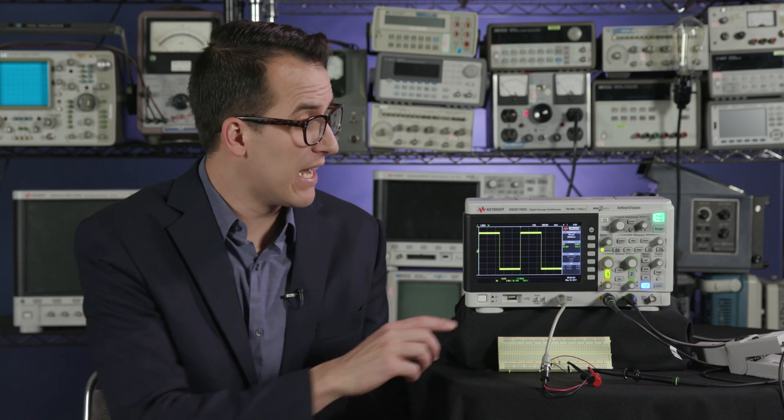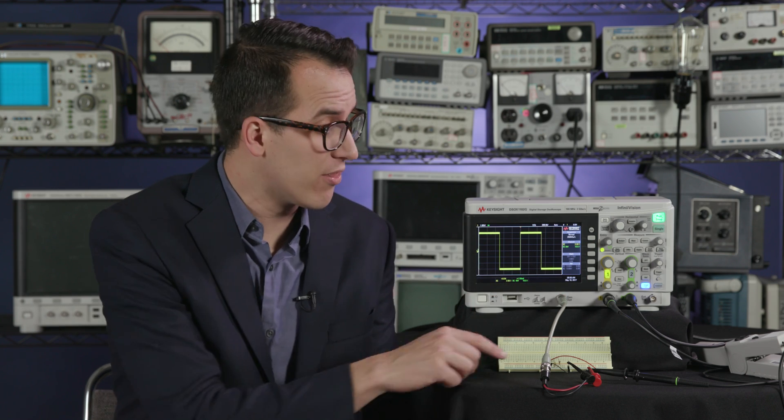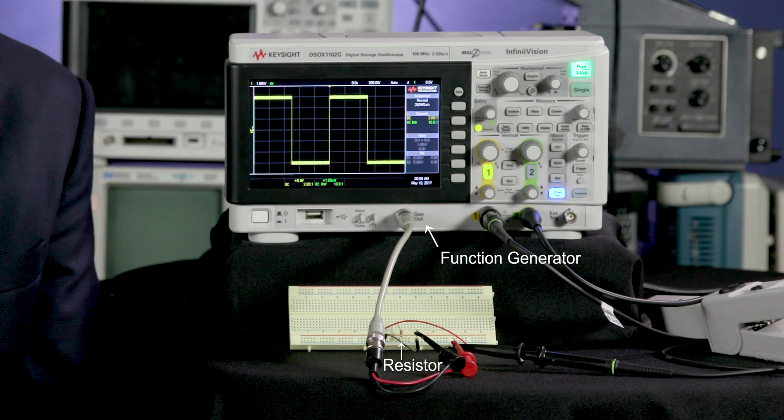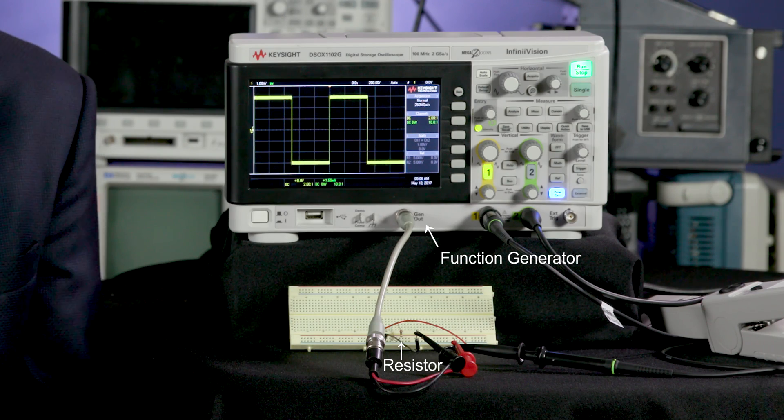Our circuit setup today is super simple. We have the wavegen from my oscilloscope running through a resistor and that's probed with channel one, and then we're going to put a capacitor in parallel with that resistor to see what happens.